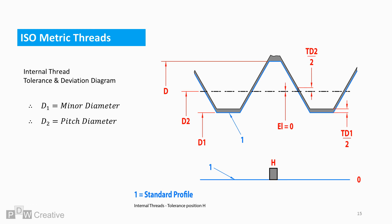The only other deviation position available for internal threads is H. H offers zero deviation before tolerance begins, and so tolerancing starts at the basic standard profile.